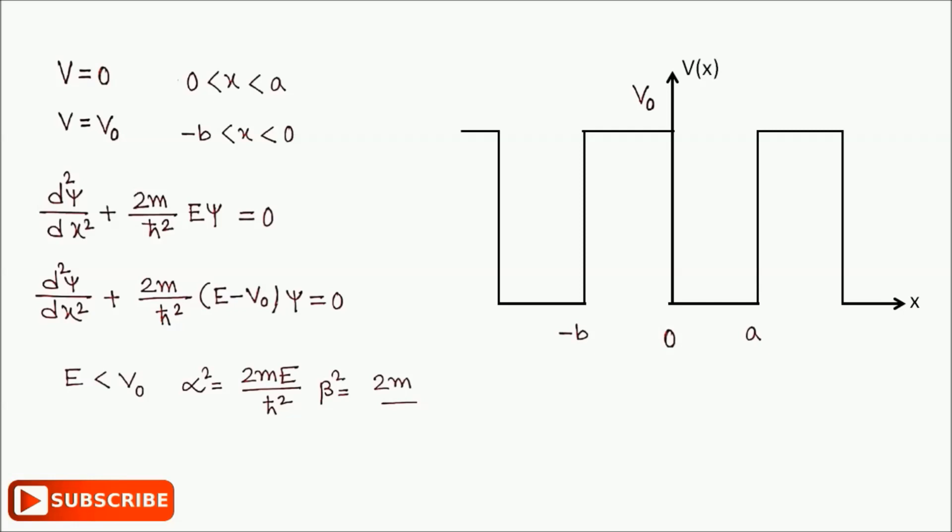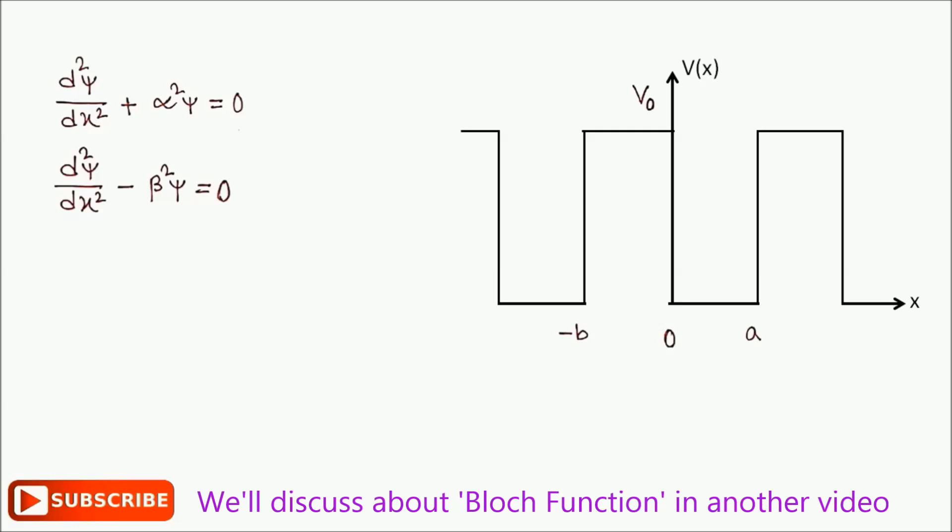Therefore, these two equations become like this. Since the potential is periodic, the wave function must have the periodicity in the form of the Bloch function: ψ(x) = e^(ikx) u_k(x), where u_k(x) is the periodic function in x with periodicity a plus b.